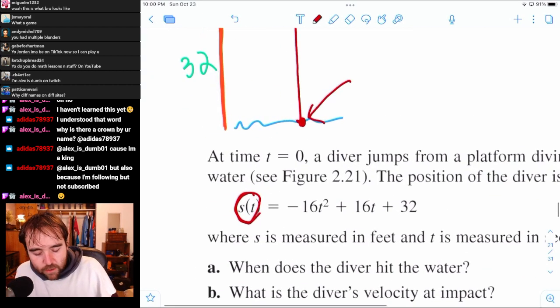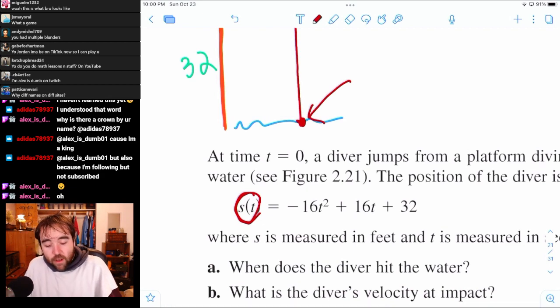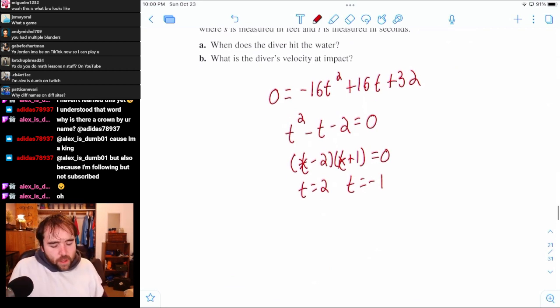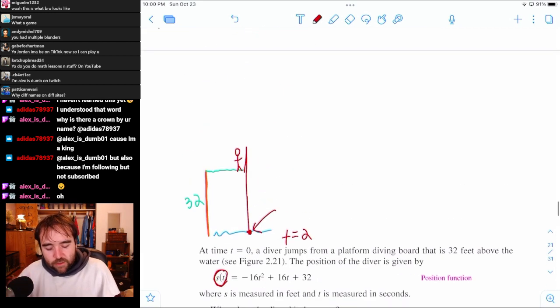That tells us that he's going to hit the water at T equals 2, and T equals negative 1. Why T equals negative 1? Well, that's just going backwards in the function. So if, like, you know, he's going like this, that's the path of his dive.